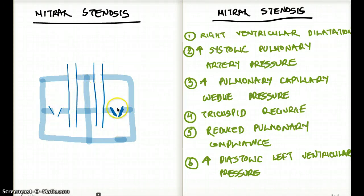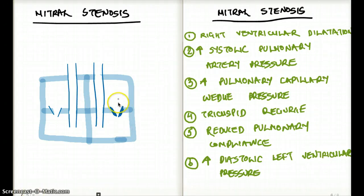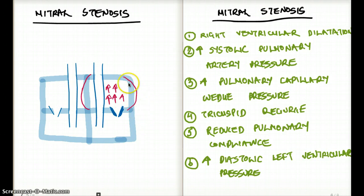If we have isolated mitral stenosis, what kind of effect would we see? Because of mitral stenosis, there is going to be pressure mounting in the left atrium. Because of this pressure, there is going to be dilatation and hypertrophy of the left atrium — both can happen because of the increased pressure.